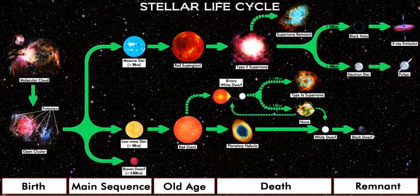Stellar evolution is the process by which a star changes over the course of time. Depending on the mass of the star, its lifetime can range from a few million years for the most massive to trillions of years for the least massive, which is considerably longer than the age of the universe. The table shows the lifetimes of stars as a function of their masses.